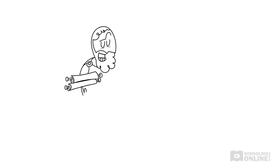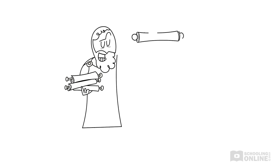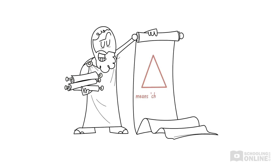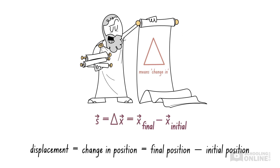It's also important to know the Greek letter delta, which looks like a triangle. In physics, delta represents 'change in'. This gives us another method of writing displacement — here, x represents the position, so delta x refers to the change in position. Thus, we can use an equation to show the definition of displacement.